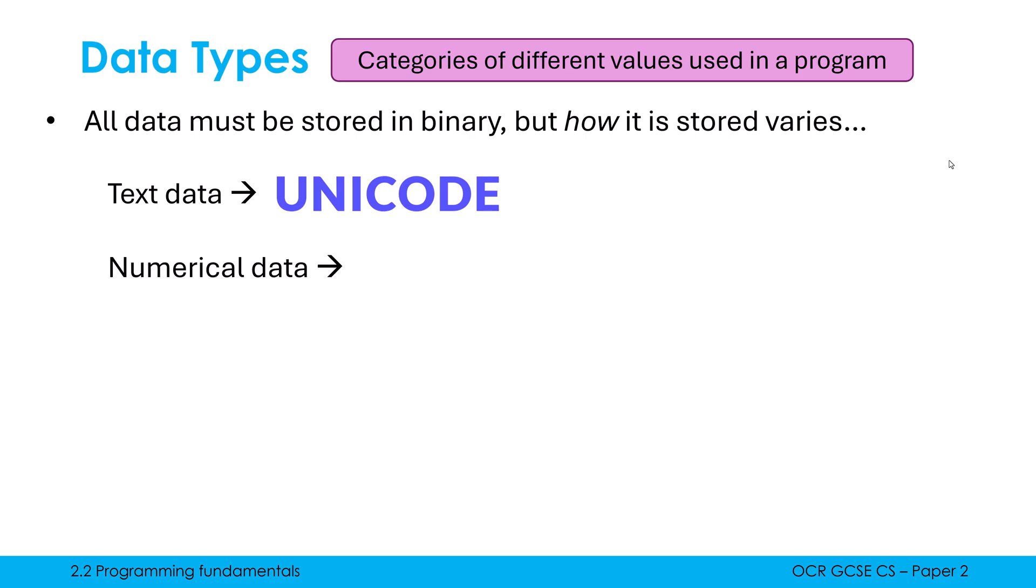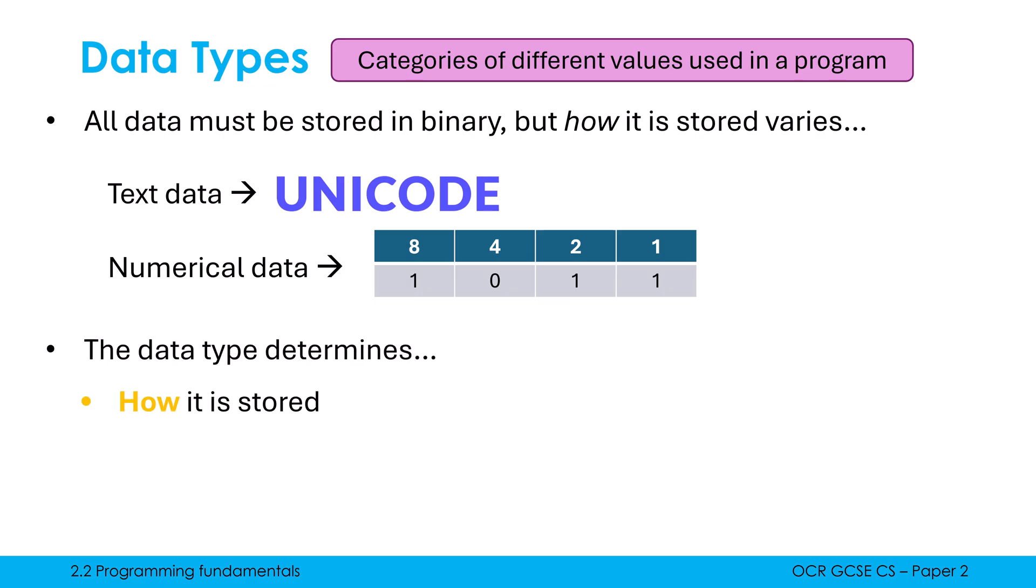Whereas if I had some numerical data, which we're going to call either a real or an integer, this will most likely be converted using the similar sort of method you learn in Paper 1, where you'd convert it using place value. Here is 11 in binary. This is how 11 would get stored if it was a number in a computer. So we have data types because the data type is going to determine how it is stored. The computer needs to know how to store it. If it's text, Unicode, if it's numbers using the binary place value.